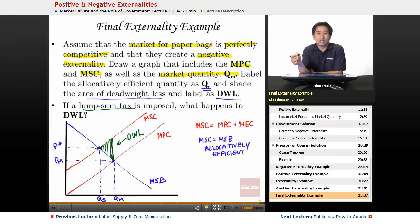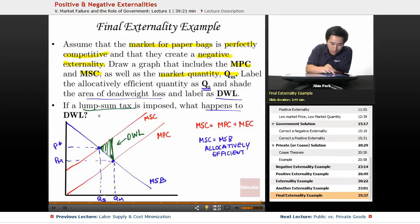Most questions that ask about lump sum tax and how it will change production - generally the answer is not anything at all. So in this case, if a lump sum tax is imposed, what happens to deadweight loss? If there's a lump sum tax, it doesn't affect any of the marginal costs, so none of the profit maximizing quantity changes. The deadweight loss stays the same.